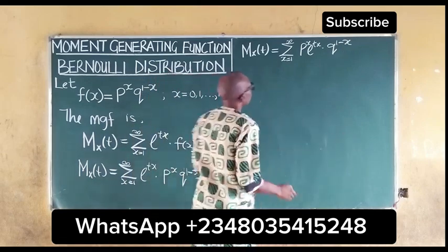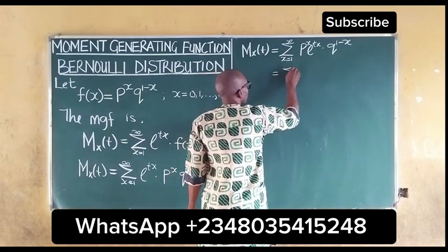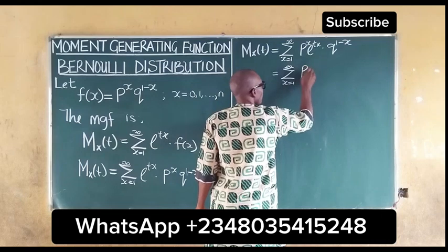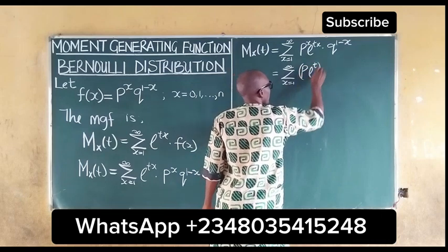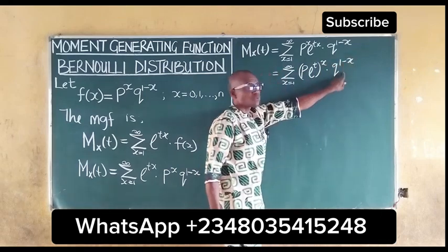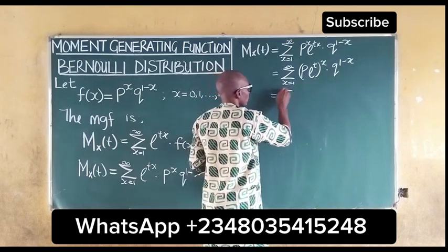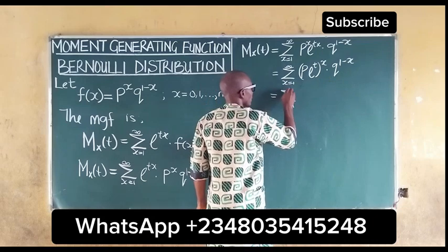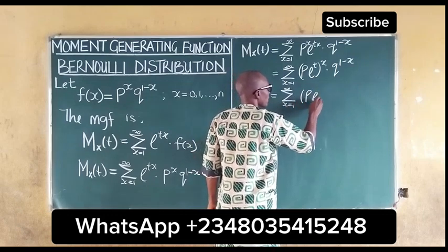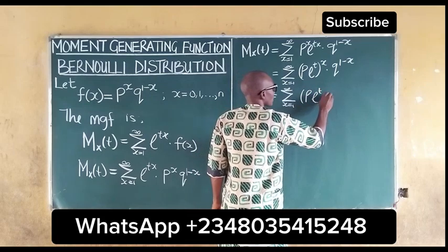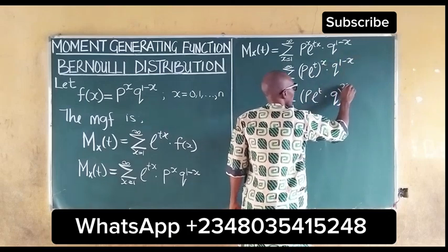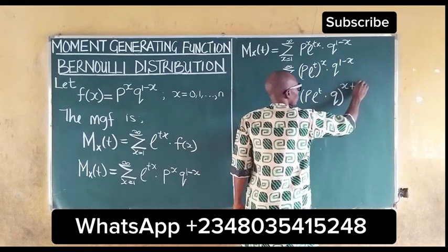Rearranging, we have the summation from x equal to 1 to infinity of (pe^t)^x multiplied by q^(1 minus x). We can combine the exponents x and (1 minus x), which sum to 1.